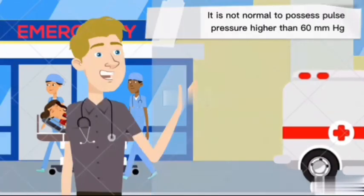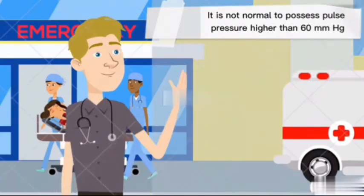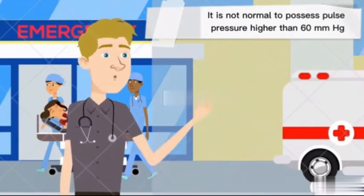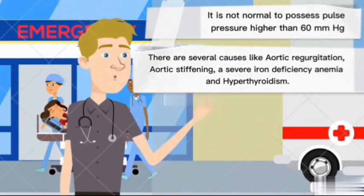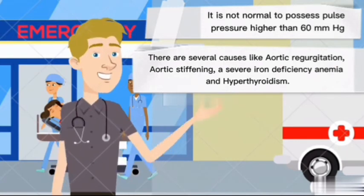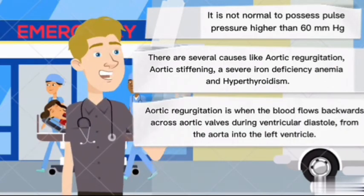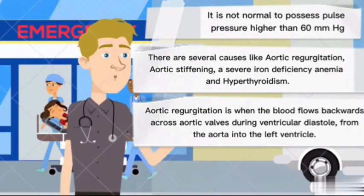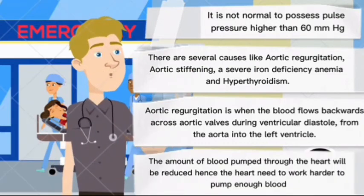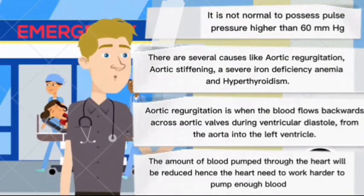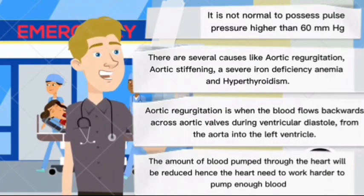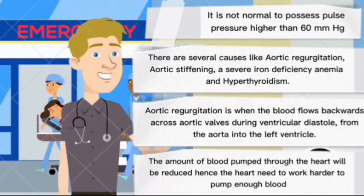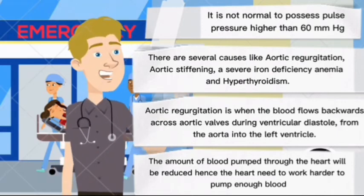It is not normal to possess a pulse pressure higher than 60 mmHg. There are several causes, such as aortic regurgitation, aortic stiffening, severe iron deficiency anemia, and hypothyroidism. Aortic regurgitation is when blood flows backward across the aortic valve during ventricular diastole, from the aorta into the left ventricle, reducing the amount of blood pumped through the heart. Hence, the heart needs to work harder, leading to an increase of systolic pressure and decrease of diastolic pressure, which results in high pulse pressure.